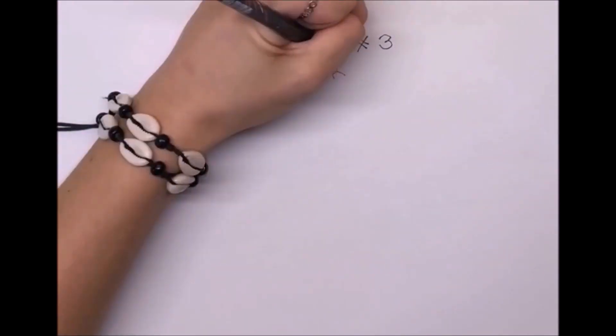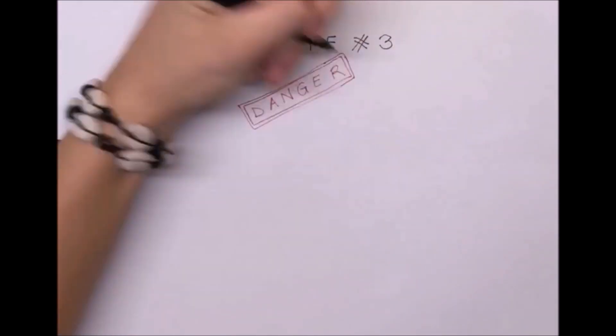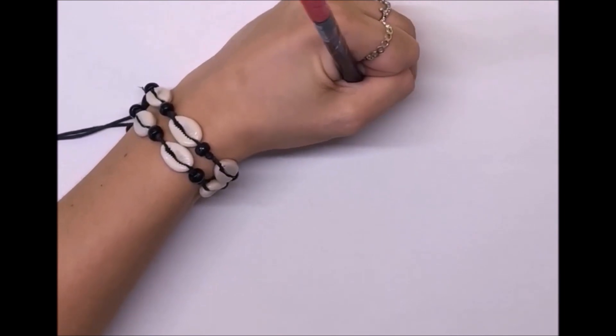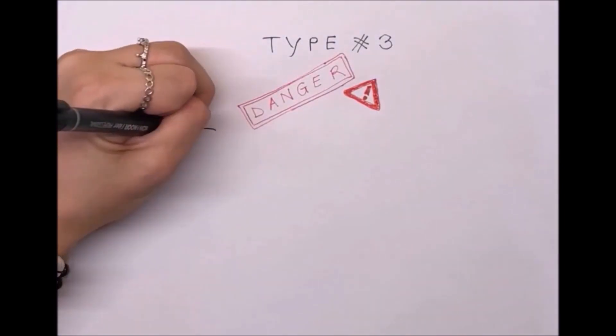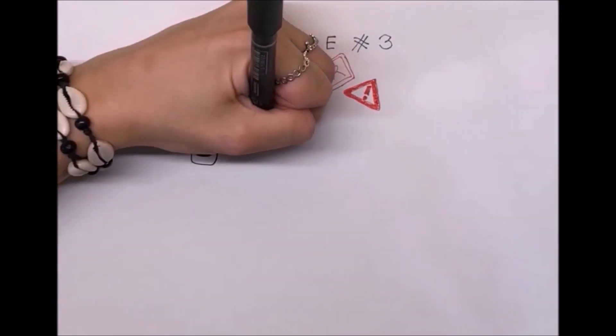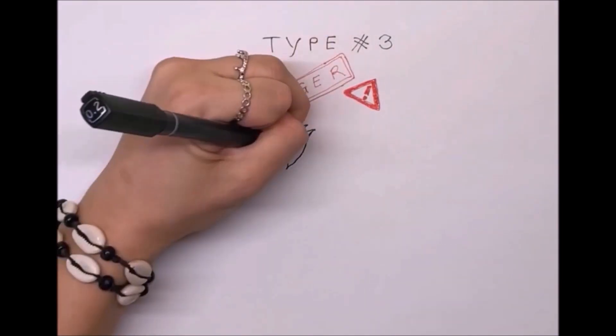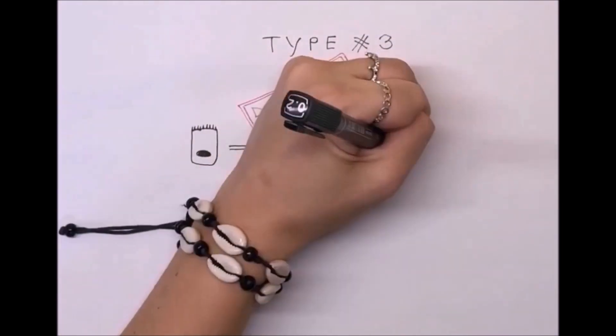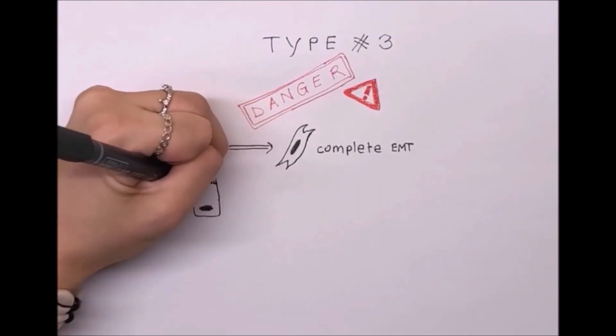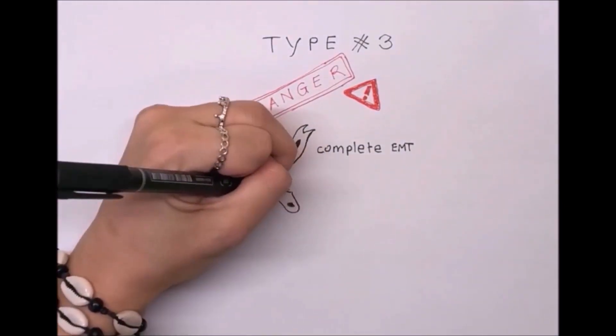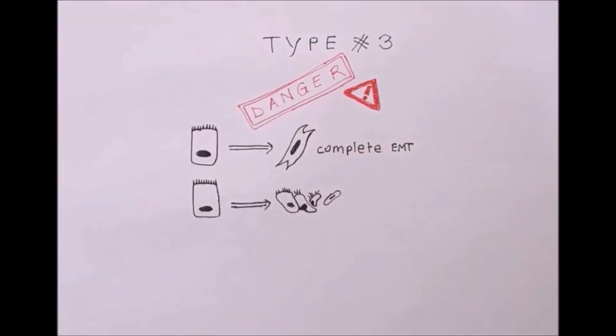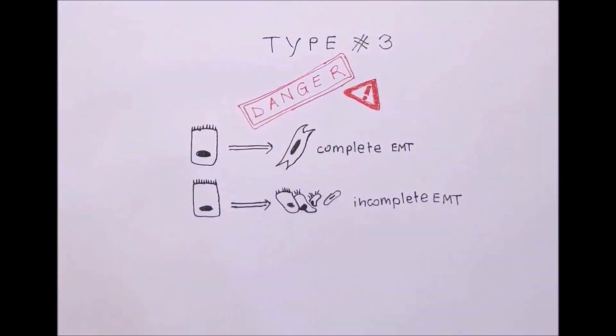The third type of EMT is oncogenic, it leads to carcinoma. Moveable cancer cells created through this mechanism form metastasis. In cancer, EMT is a natural process. Cells can either show the full mesenchymal or epithelial phenotype or an intermediate one. This transformation can involve only part of the tumor.